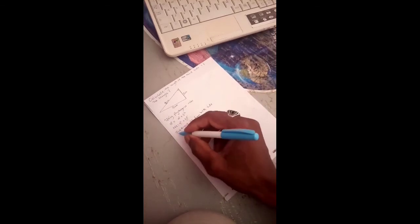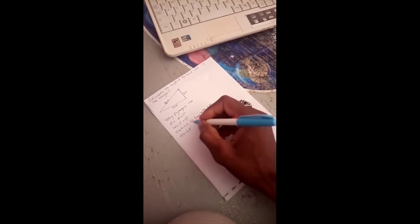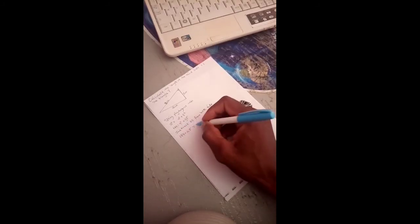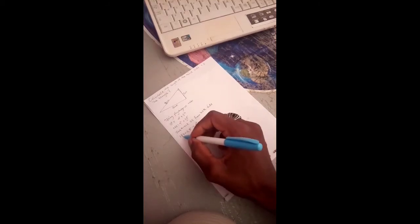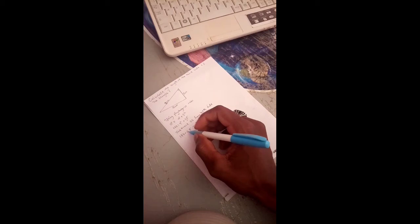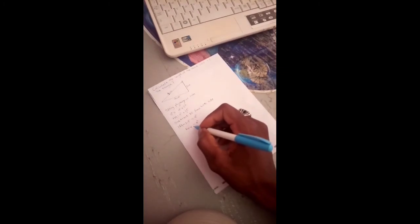Therefore here we have 169 minus 25, which is equal to a squared. So 169 minus 25 equals to 144 equals to a squared. From here we are going to take the square root of 144.